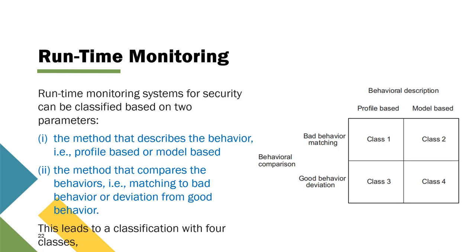The next security type is runtime monitoring. Runtime monitoring works by observing the behavior of your system. Runtime monitoring systems for security can be classified based on two parameters: the method that describes the behavior — either profile-based or model-based — and the method that compares the behavior — either matching to bad behavior or detecting deviation from good behavior. This leads to four classes of runtime monitoring.